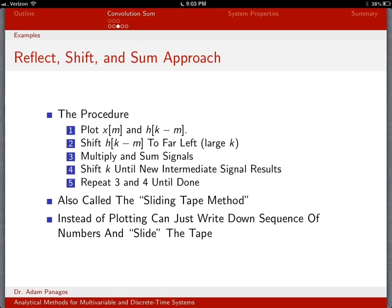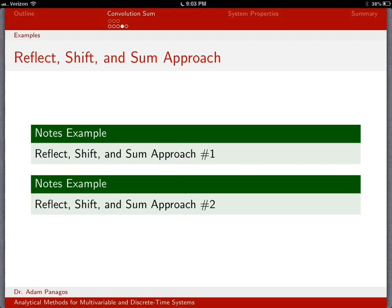So let's go ahead and look at this procedure and example. Really what it boils down to is being able to plot x[m] and h[k-m] and then shifting h around on the time axis. And you'll see what we mean as we get into this example.